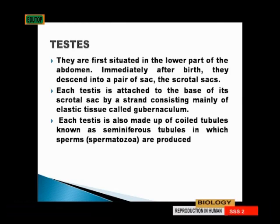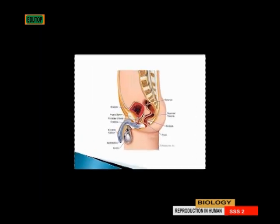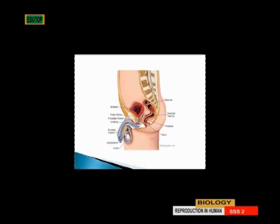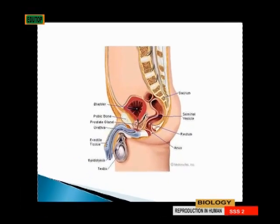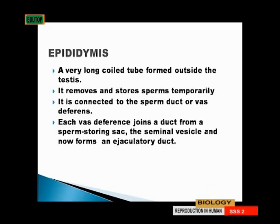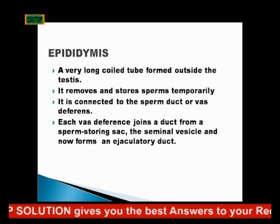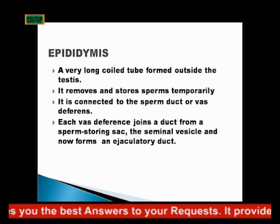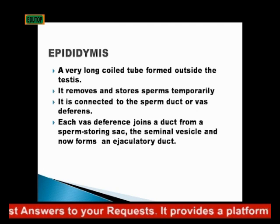Each testis is also made up of coiled tubules known as the seminiferous tubules, in which the sperm are produced. From the diagram, the scrotum is the sac with the testes inside it. The epididymis sits on top of it — it is a very long coiled tube formed outside the testes but still in the scrotal sac. It removes and stores sperm temporarily.